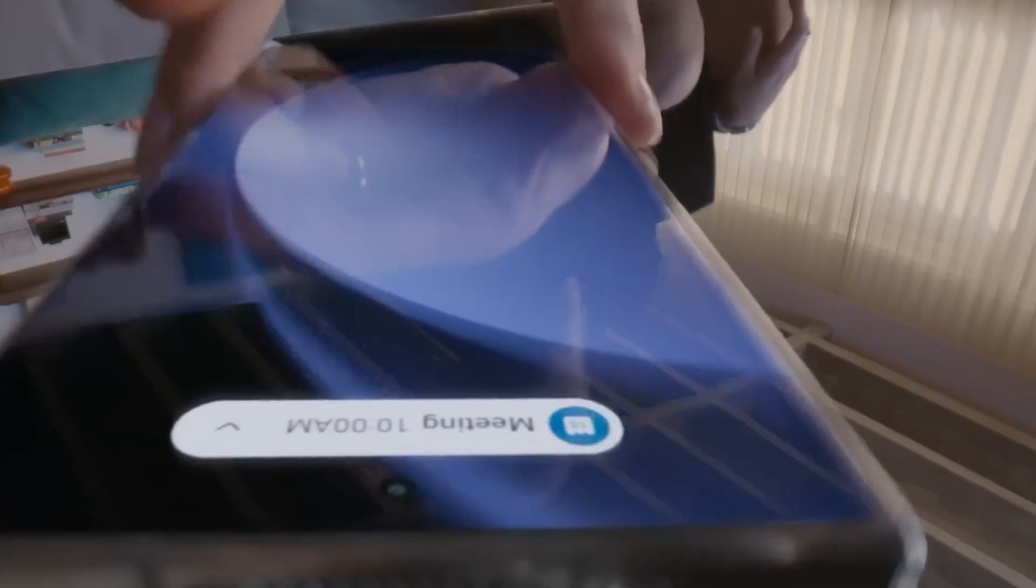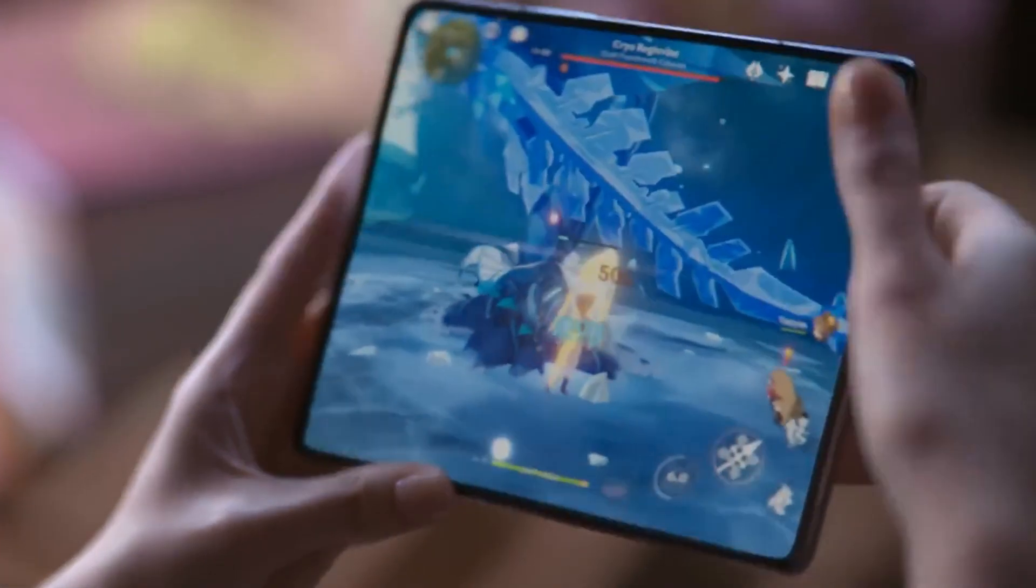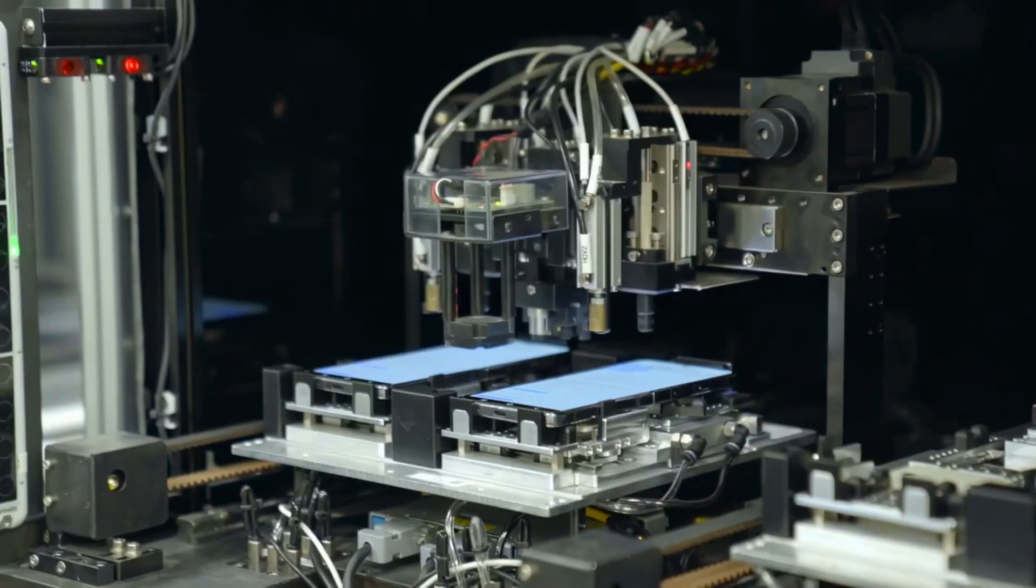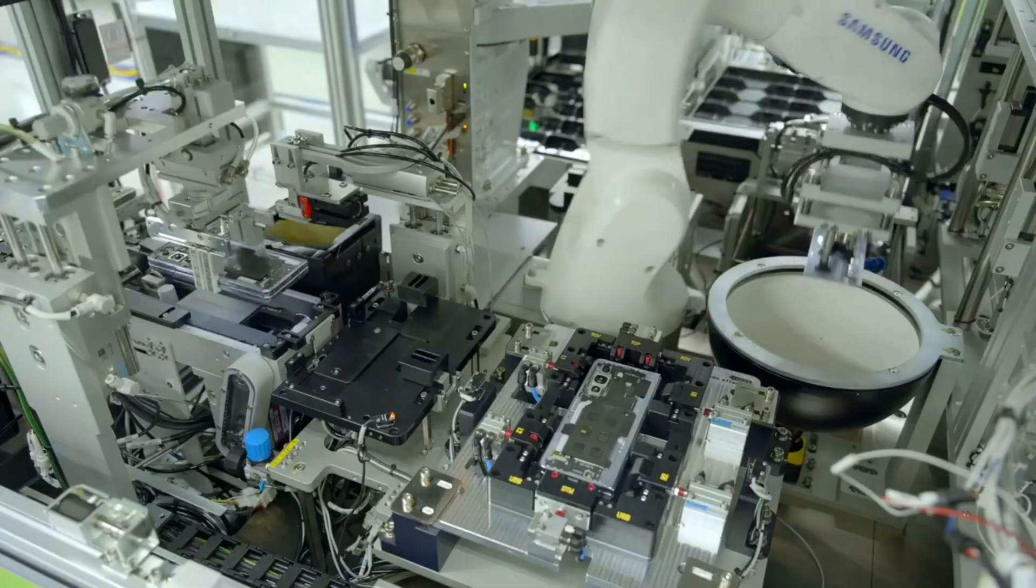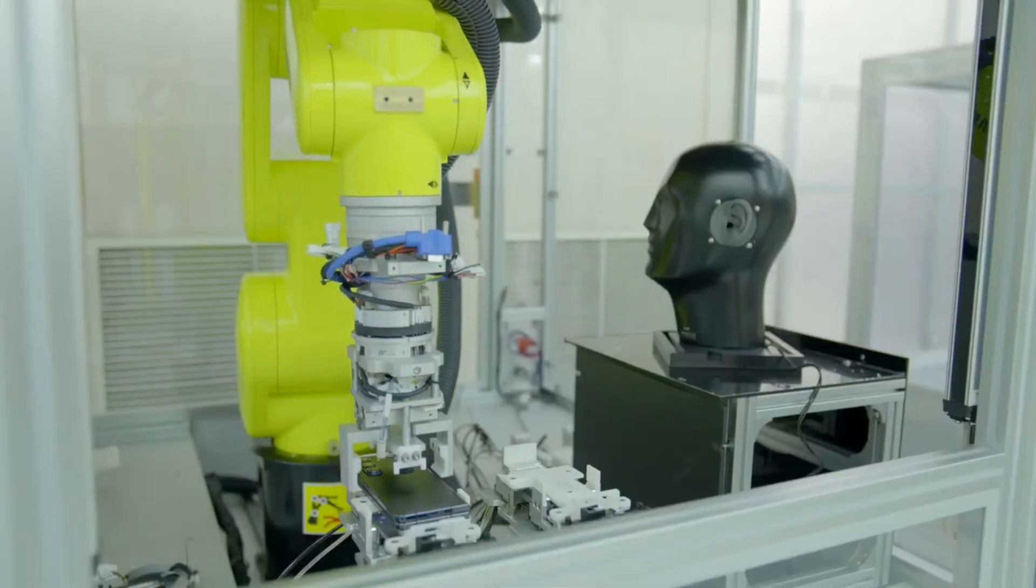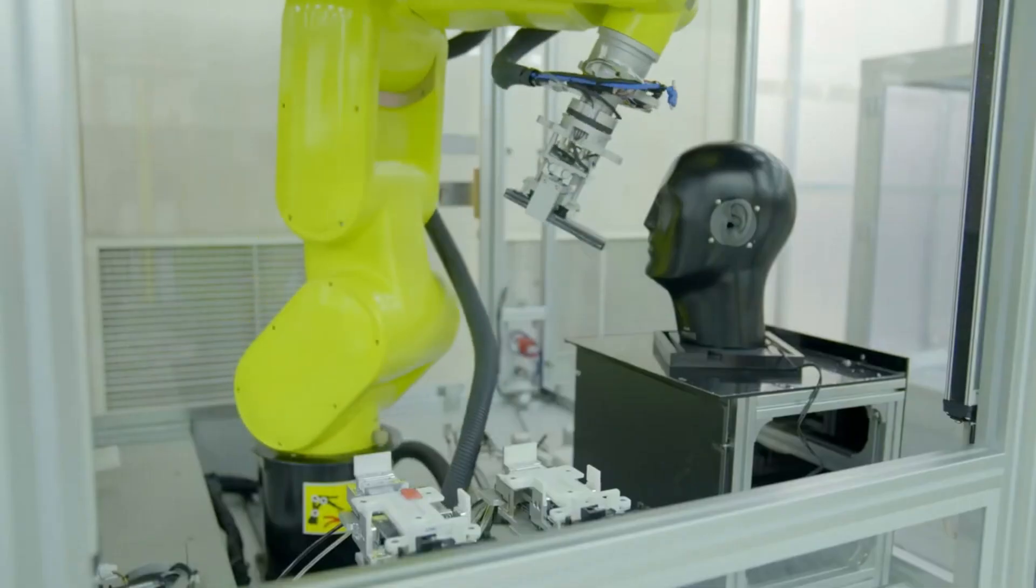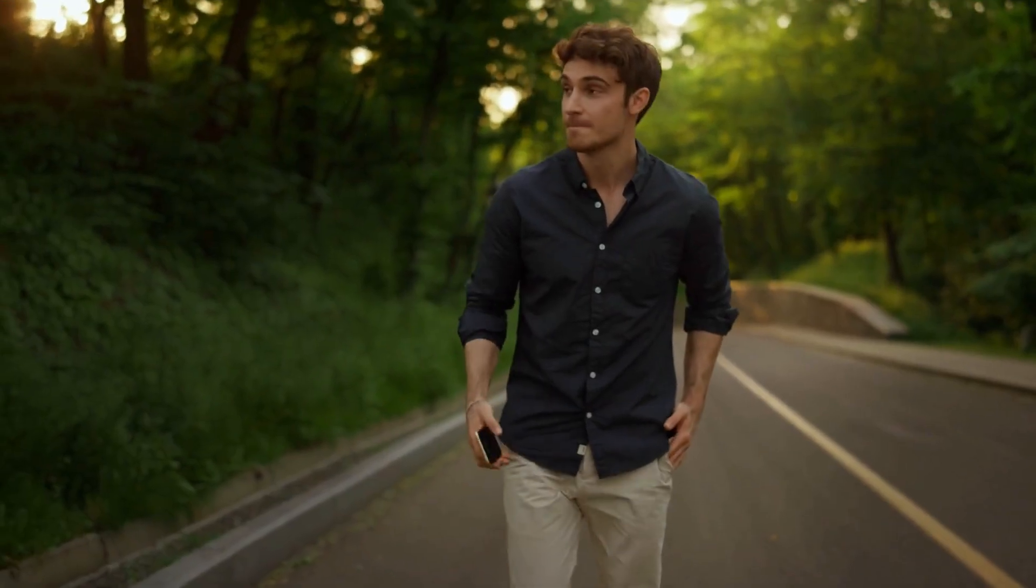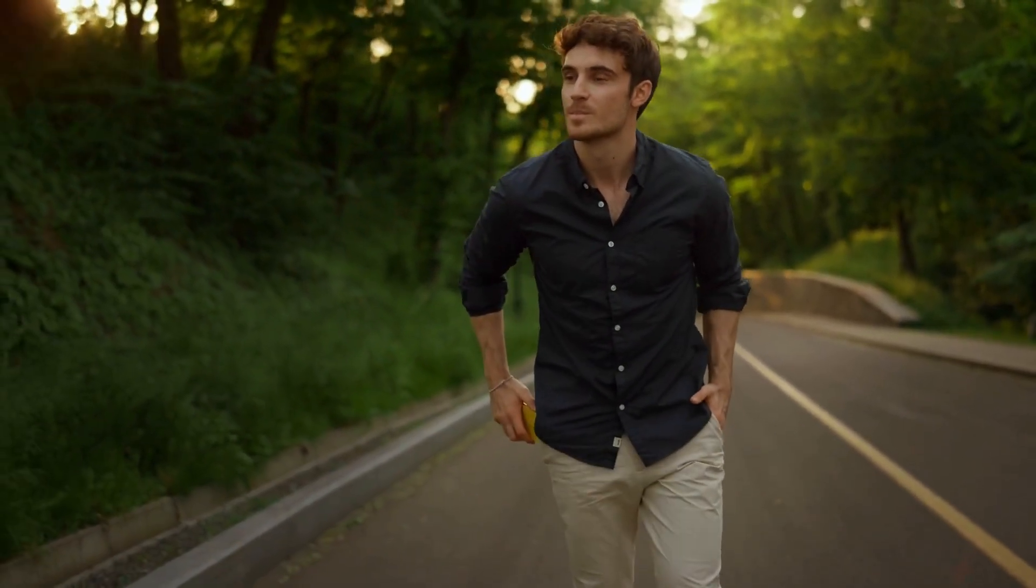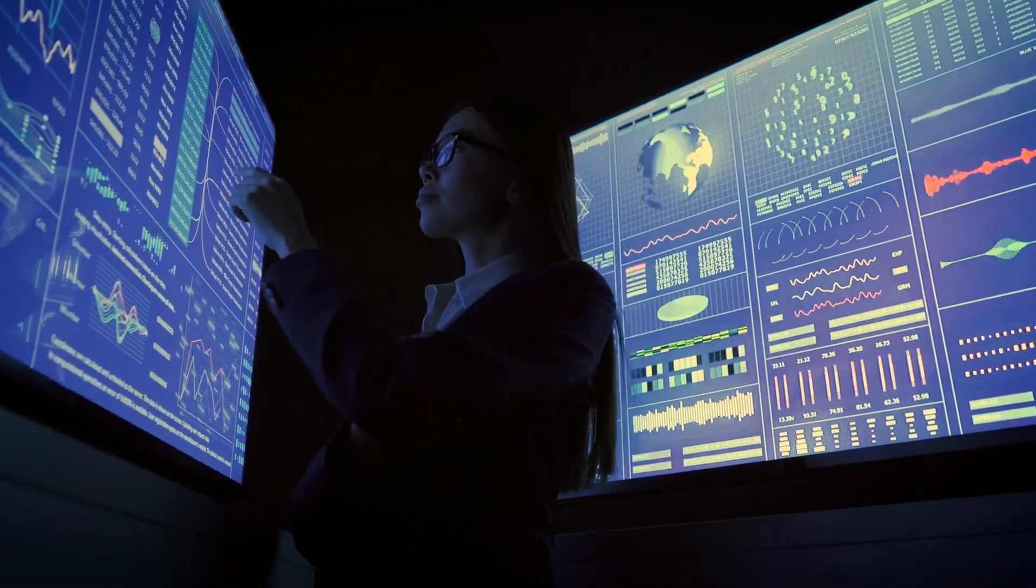So the next time you pick up your Samsung phone, remember, you're not just holding a device. You're holding the result of one of the most sophisticated manufacturing operations in human history. A process that combines cutting-edge robotics, material science, and sustainable practices to create something that fits in your pocket, but represents billions of dollars in research and development.